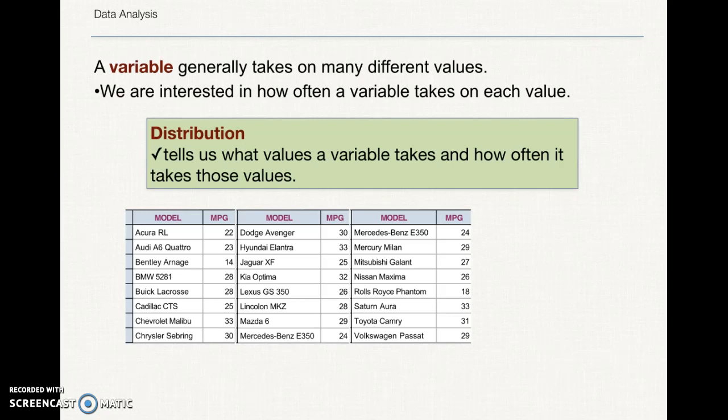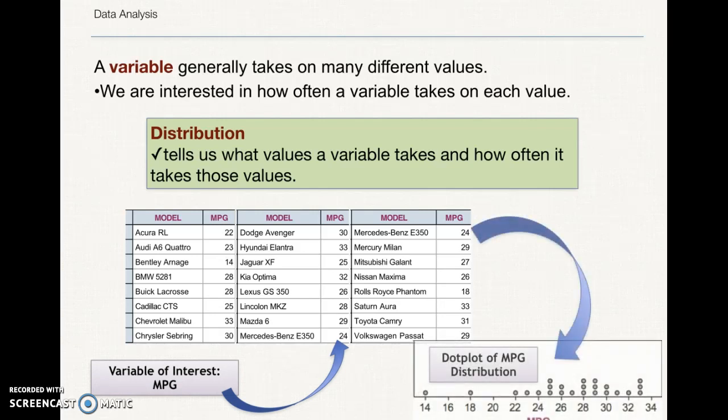So here's an example where we have a lot of different individual vehicle models, and we have the miles per gallon for that particular vehicle model. So the individuals are the individual cars. The variable, MPG, is a numerical, miles per gallon variable, and it can take on a lot of different values.